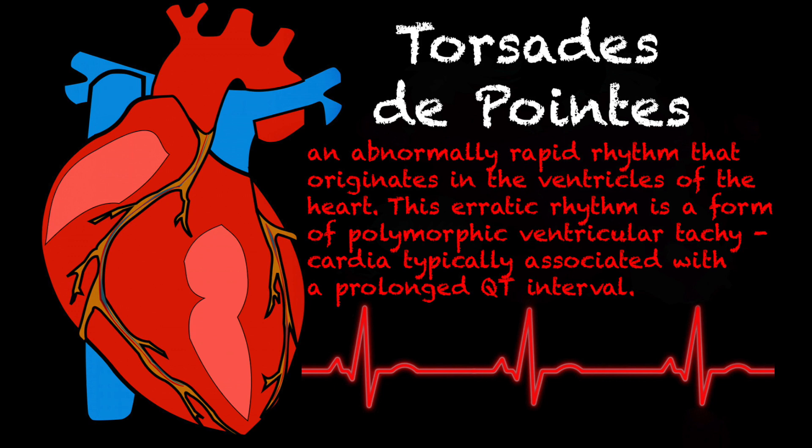Torsades is an abnormally rapid rhythm that originates in the ventricles of the heart. This erratic rhythm is a form of polymorphic ventricular tachycardia, and it's typically associated with a prolonged QT interval.